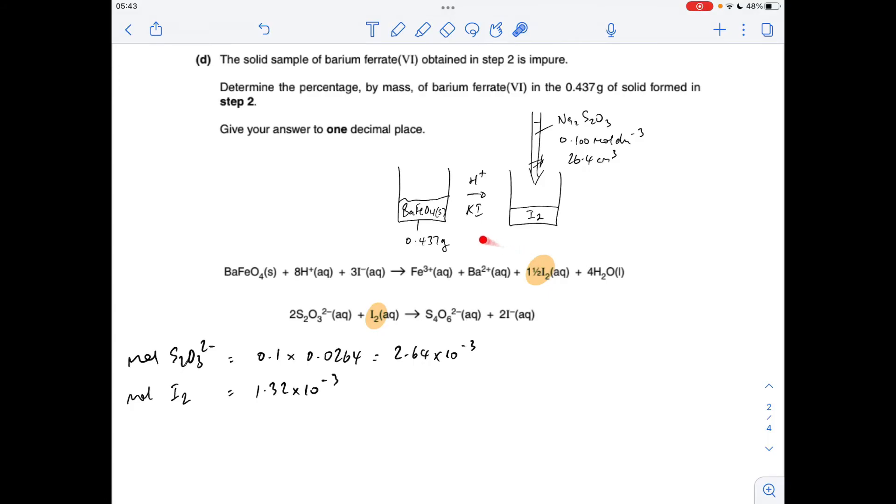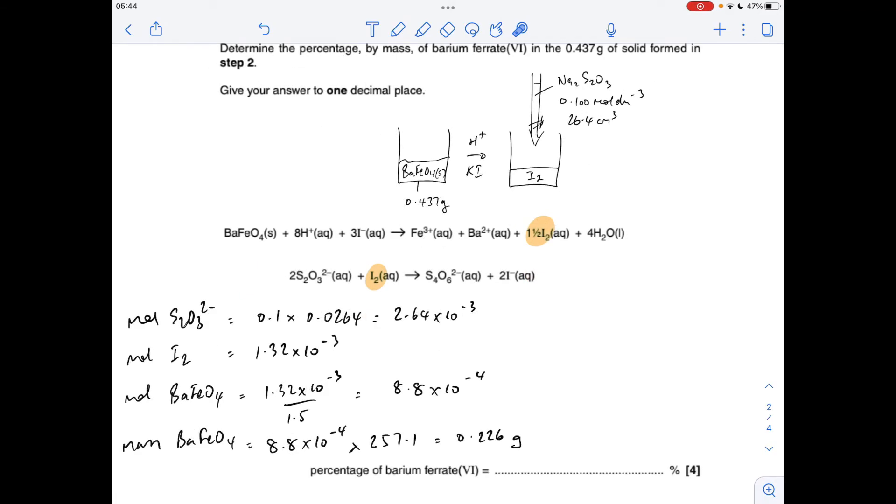Next thing I'm going to do is apply this mole ratio. That's a 1 to 1.5 mole ratio. We're going to divide by 1.5 to get the moles of this. That's coming out at 8.8×10⁻⁴. We're now going to convert that into grams by multiplying by the MR of this. To three significant figures, that comes out at that. All we're going to do now is put that over that 0.437 times 100 and that will give us our percentage. Which to one decimal place comes out at 51.8%.